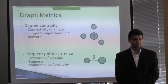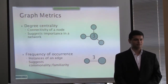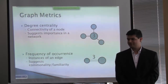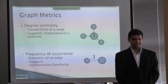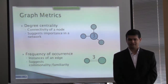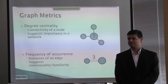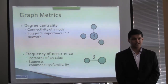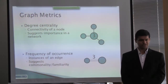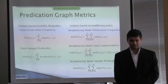A committee member asks whether predicate types are dropped when building the graphs. The presenter confirms that in this work, predicate types are not being considered, but that is something planned for later. The rationale for graph metrics comes from two different properties: degree centrality, which is basically the connectivity of a node and suggests how important it is in the graph; and frequency of occurrence, which counts instances of an edge and suggests commonality or familiarity between nodes.